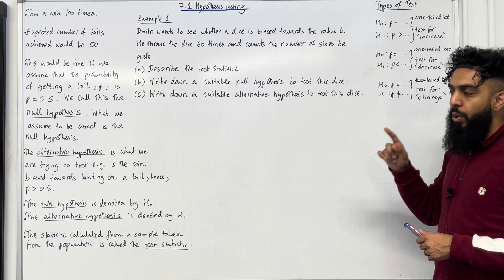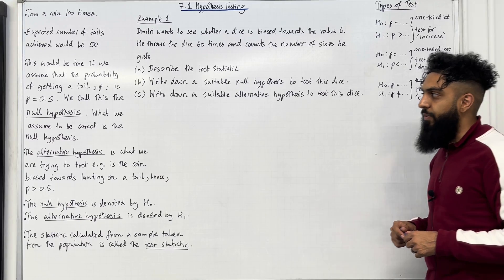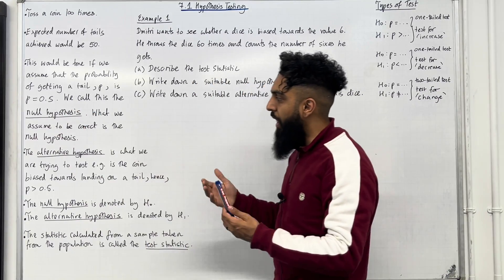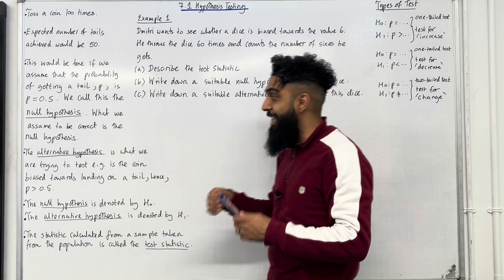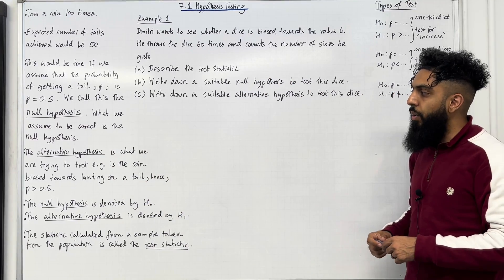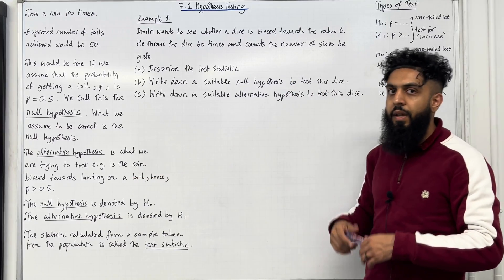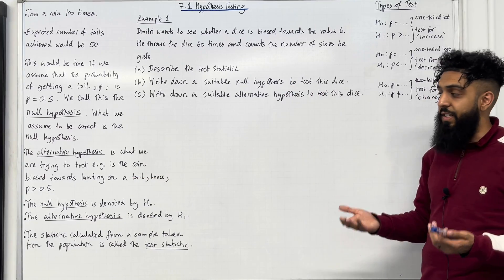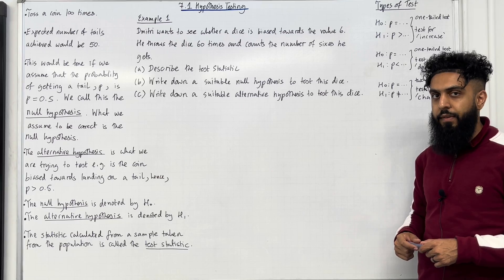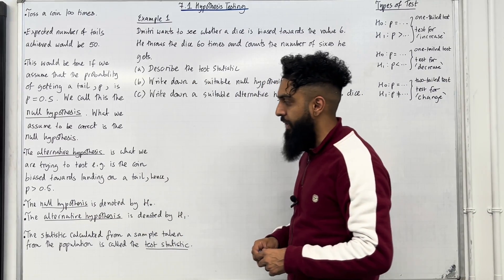What we assume to be correct is called the null hypothesis. So the null hypothesis represents P equals 0.5. On the other hand, the alternative hypothesis is what we are trying to test. For example, is the coin biased towards landing on a tail? If it is biased towards landing on a tail, we would have P greater than 0.5 — so P greater than 0.5 represents the alternative hypothesis.